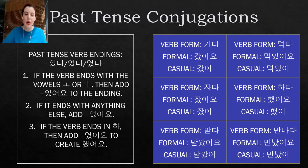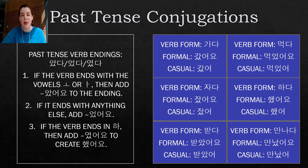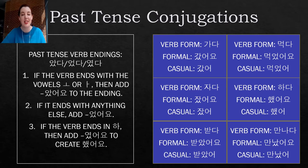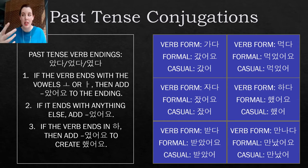For 하다, remember 해요 is our present tense form. The formal past tense — meaning 'I did that' — is 했어요, and the casual form is 했어. For 받다, meaning to receive: the past tense formal form is 받았어요, meaning 'I received something,' and the casual form is 받았어. The last one, 만나다, meaning to meet: the formal present was 만나요, and the past tense form is 만났어요, meaning 'I met.' The casual form is 만났어.